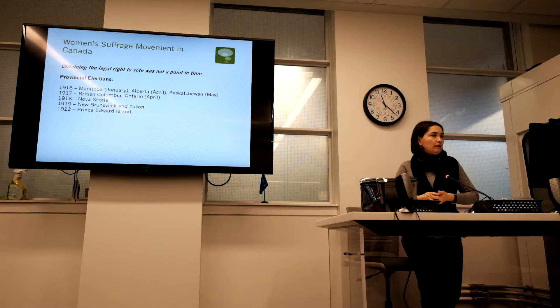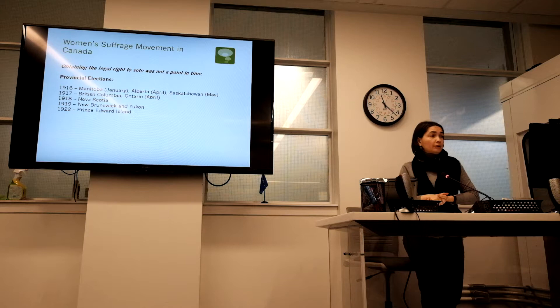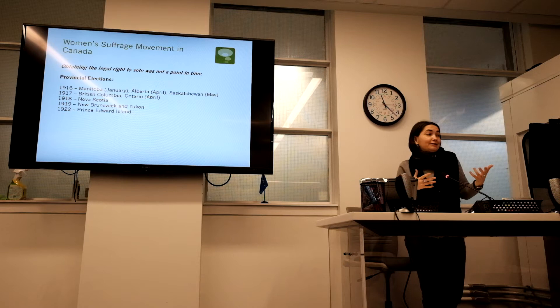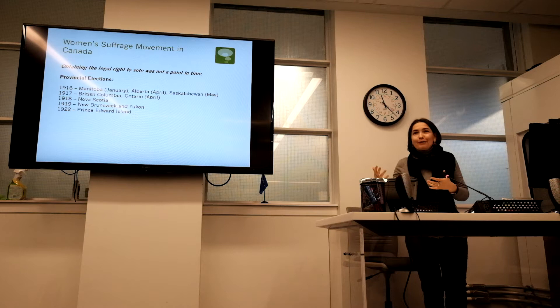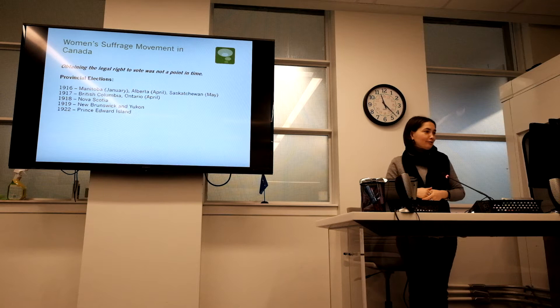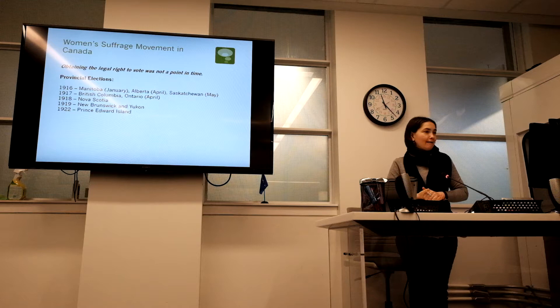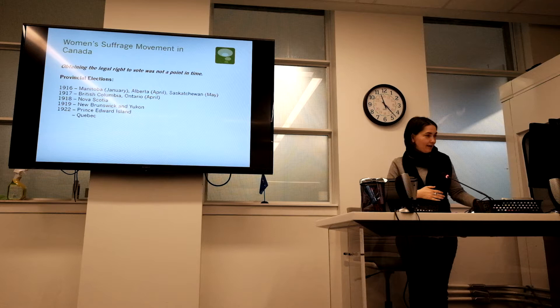The first province in Canada to grant women the right to vote was Manitoba, in January 1916, followed by Alberta in April and Saskatchewan in May. So the West at the time was much more progressive than its current stereotype suggests. In 1917, British Columbia and Ontario followed suit. In 1918, Nova Scotia. In 1919, New Brunswick and Yukon. In 1922, Prince Edward Island. You probably noticed that one province is missing — and that's Quebec.